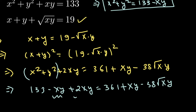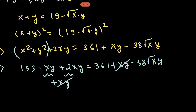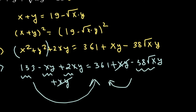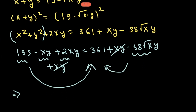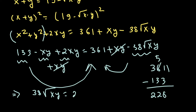Simplifying: −xy + 2xy gives +xy, which cancels with the xy on the right side. Shifting 133 to the other side gives us 38√(xy) = 361 − 133. Computing 361 − 133 gives 228, so the right-hand side is 228.